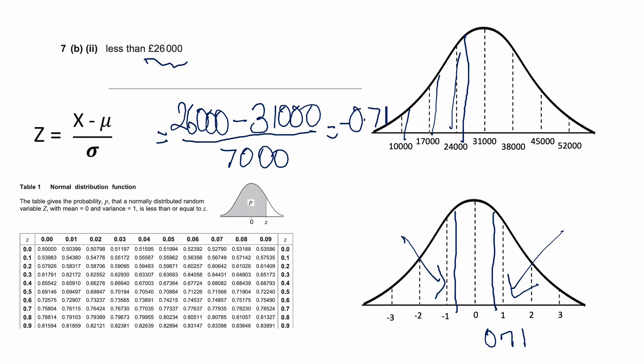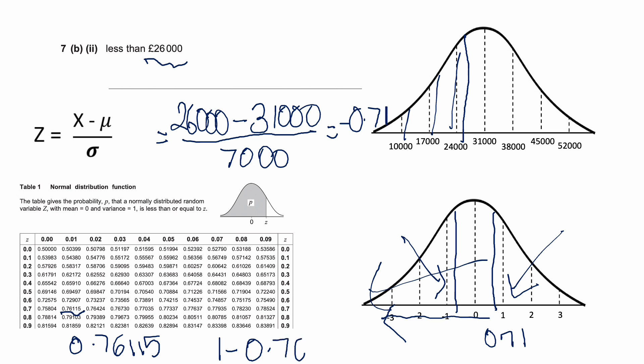So we look up 0.71 in the tables: 0.7 on one axis, 0.01 on the other, giving 0.76115. That's the probability of being less than +0.71, i.e., this large left portion. Subtracting from 1 gives 1 − 0.76115 = 0.23885, which rounds to 0.24 to two decimal places. So the probability that the salary is less than 26,000 is 0.24.